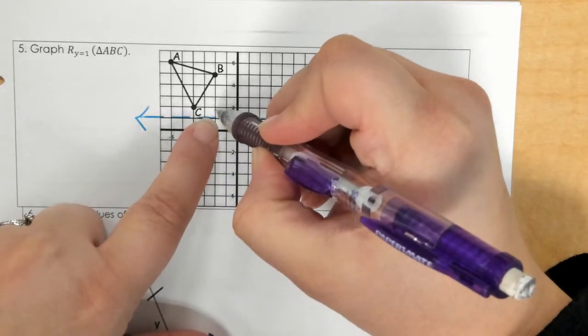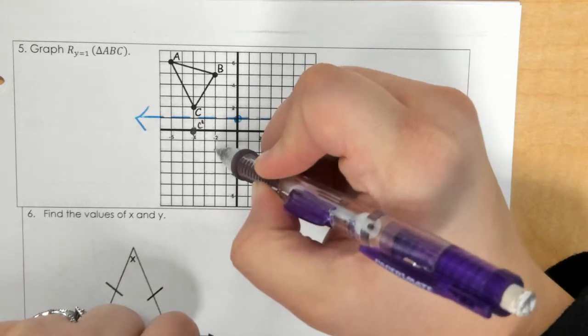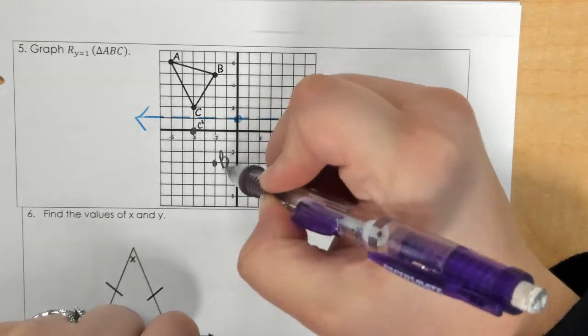For b, we're going up 1, 2, 3, 4. So we're going to go down 1, 2, 3, 4. And we have b prime.